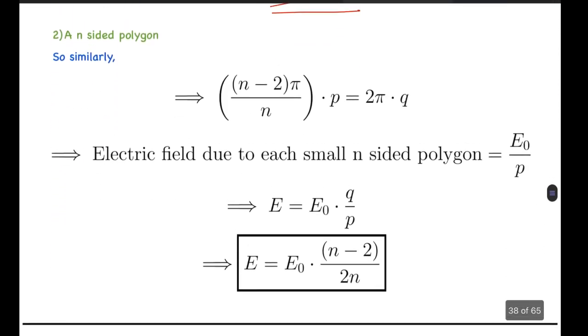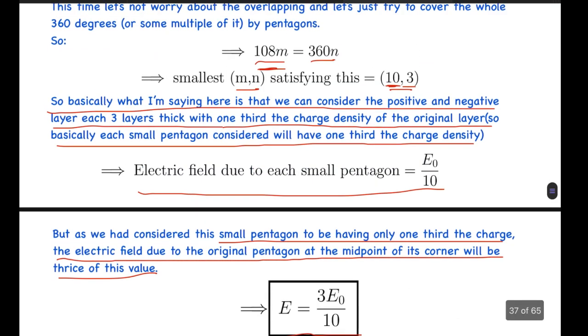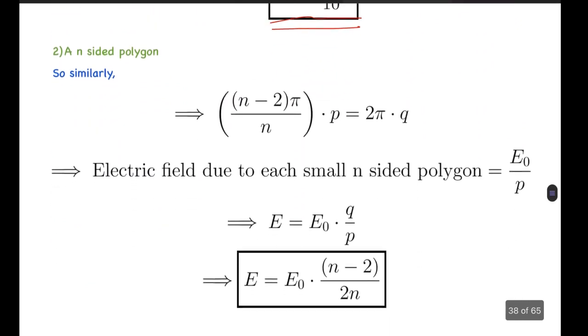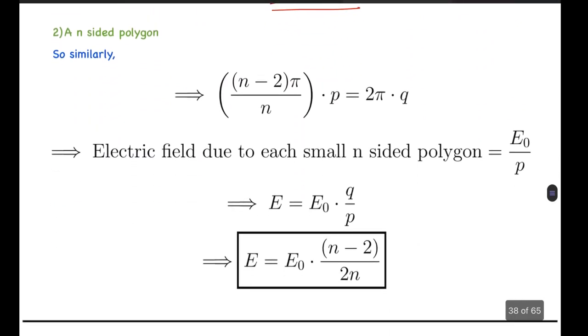generalize this to an n-sided polygon. Just like we did here - 108m equals 360n - we can do it for any general polygon. We can write the angle of the polygon, which will be (n-2)π/n times some integer p, should be equal to 2π times some integer q, where 2π equals 360 degrees, the angle around a point.